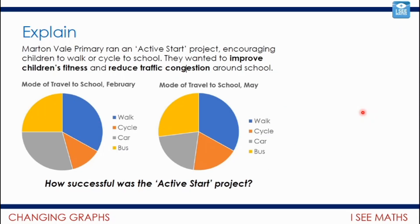One of your tasks to do independently is about Martin Vale Primary School, which ran an active start project. What is the change in the graphs that we see? It was like this at first and like this afterwards — what conclusions can you draw? See if you can combine the things we've looked at in these examples to come up with your own conclusion when you work on that task.